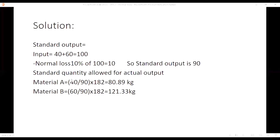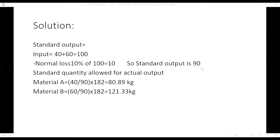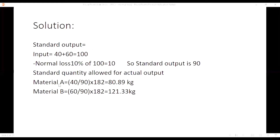So standard quantity allowed for actual output will be calculated as follows: 40 divided by 90 multiplied by actual output 182 kg, giving 80.89 kg for material A. And for material B: 60 divided by 90 multiplied by 182, giving 121.33 kg. So standard output was 90 kg and actual output was 182 kg. These are the standard quantities allowed for actual output.